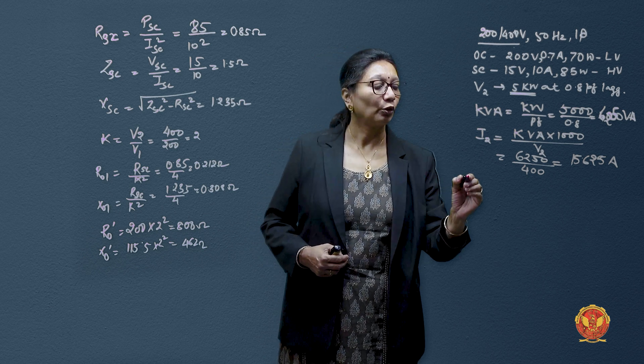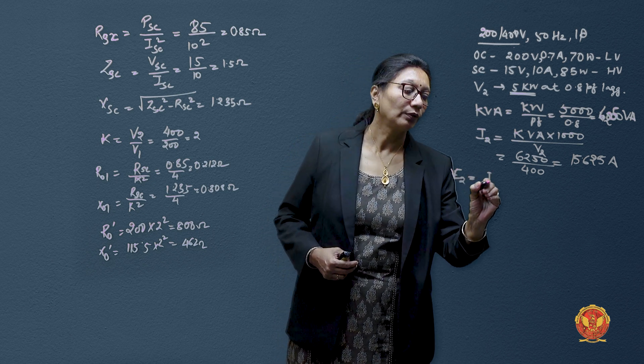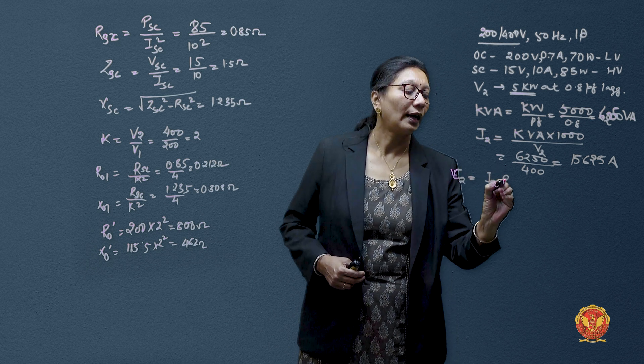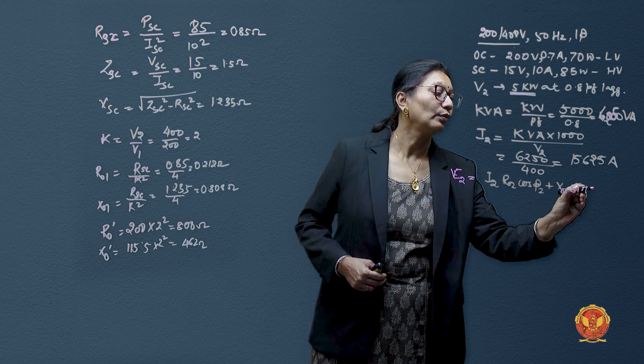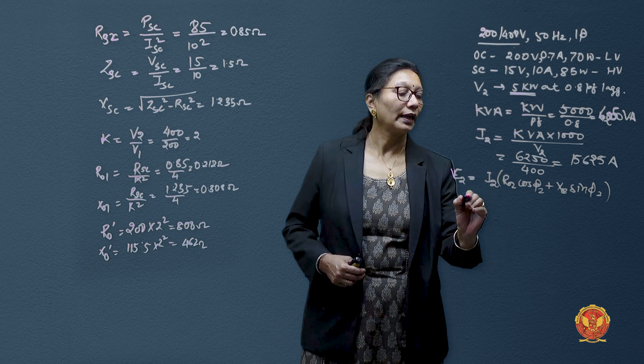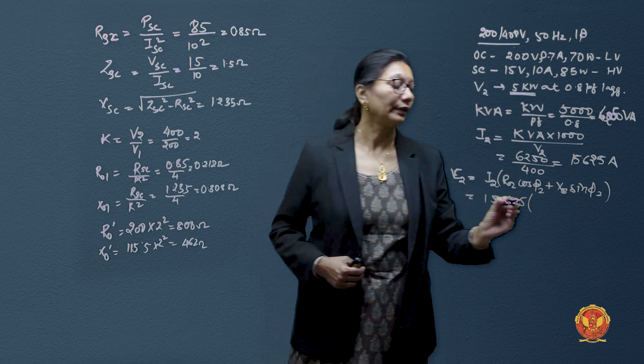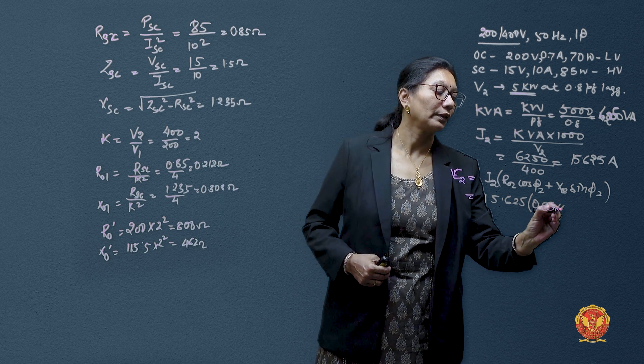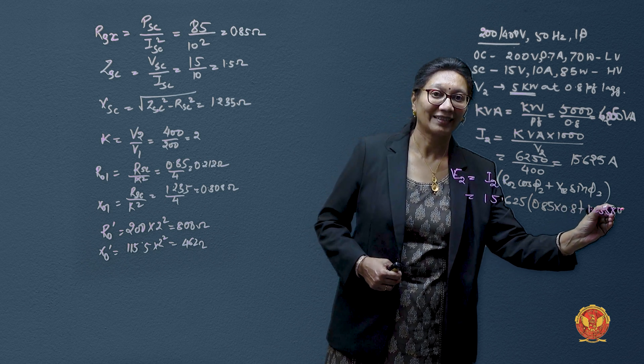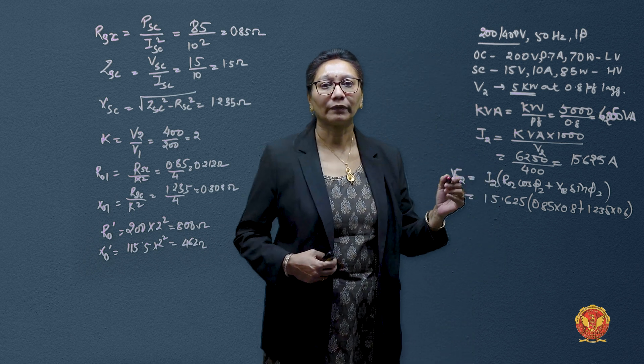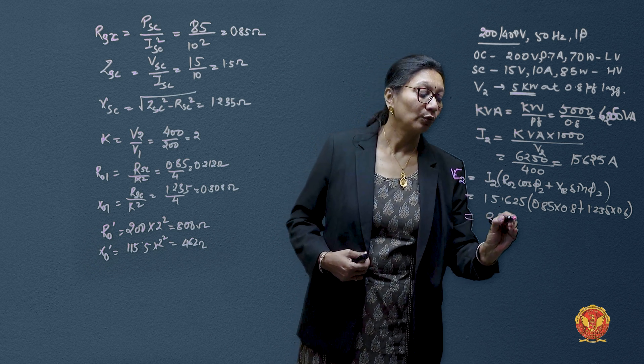When we have the voltage regulation required equation, that is e2 would be equal to I2 into (r cos phi 2 plus x sin phi 2). So the current is 15.625 into r naught was 0.85, power factor is 0.8 plus x naught was 1.235 into 0.6. This is very convenient with 0.8 power factor. We immediately know 0.6 is sine phi 2. And therefore the answer comes out to be 22.2 volts.